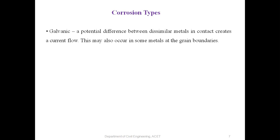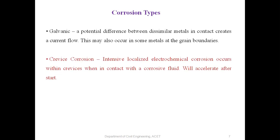Whenever dissimilar metals come in contact, current flows and reacts with the metal, causing corrosion. Next is crevice corrosion: intensive, localized electrochemical corrosion that occurs within crevices when in contact with a corrosive fluid, which will accelerate after it starts.